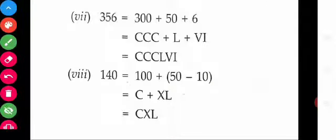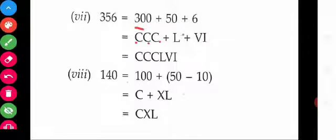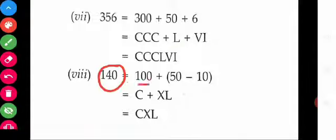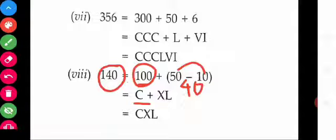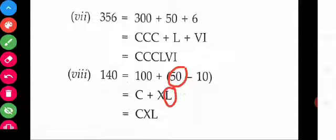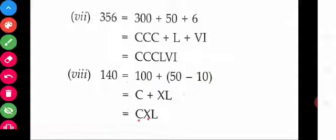Look at the examples. 356 — expand this as 300 plus 50 plus 6. C stands for 100, so three times C gives 300. L stands for 50. And VI stands for 6. So 356 is written as CCCLVI. Next, 140 — split this as 100 plus 40, where 40 is 50 minus 10. 100 is C, 50 is L, 10 is X. So 140 is written as CXL.